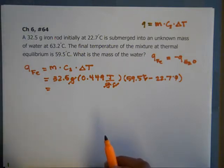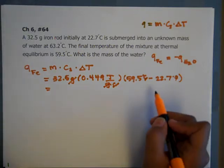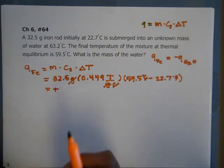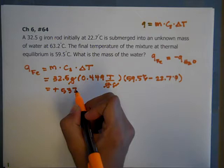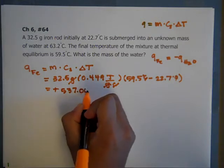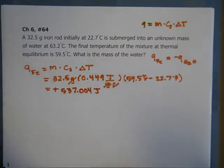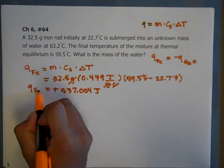And that magnitude, with the sign which is going to be positive because delta T is positive, is 537.004 joules. And I left a little extra sig figs for right now. I think we're going to have three sig figs at the end. So that is Q of iron.